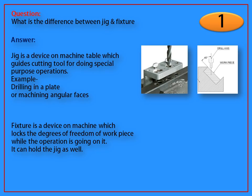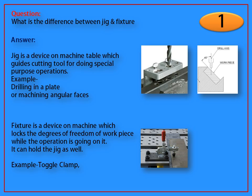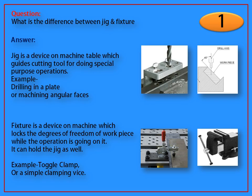Fixture is a device on machine which locks the degrees of freedom of workpiece while the operation is going on it. It can hold the jig as well. Example: toggle clamp or a simple clamping vice.